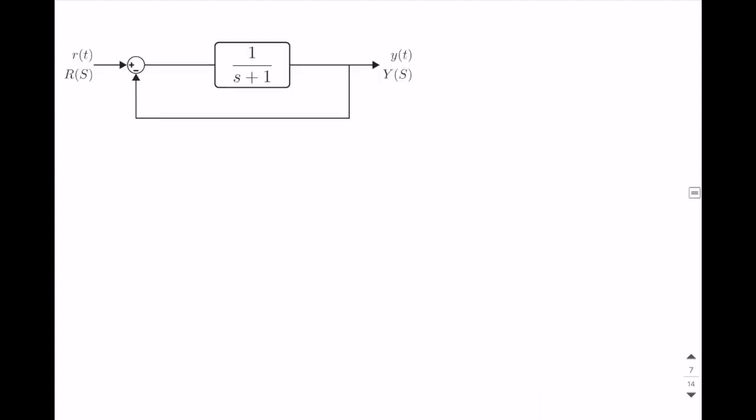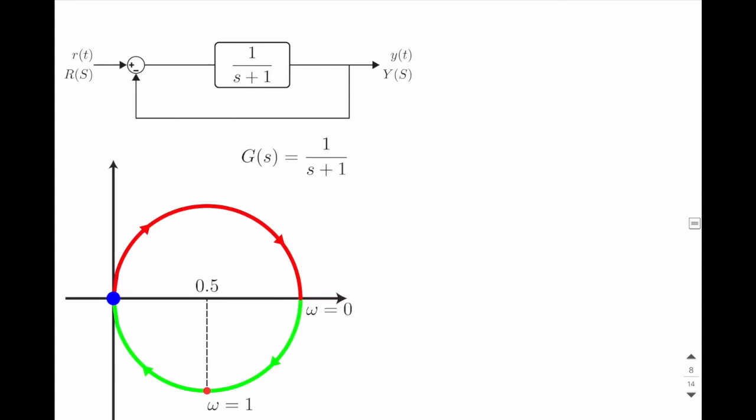Once you draw the Nyquist plot, indeed, stability analysis is pretty straightforward and easy. Let's show an example. So this is the feedback system. There is no controller. And our open-loop transfer function is simply equal to one over S plus one. So what we need to do is we need to draw the Nyquist plot of one over S plus one, which we already did in the previous lecture. So if you remember, Nyquist plot of this transfer function is a full circle which is located strictly in the right half plane. And we know that minus one is in the left half plane. So this system is indeed stable.